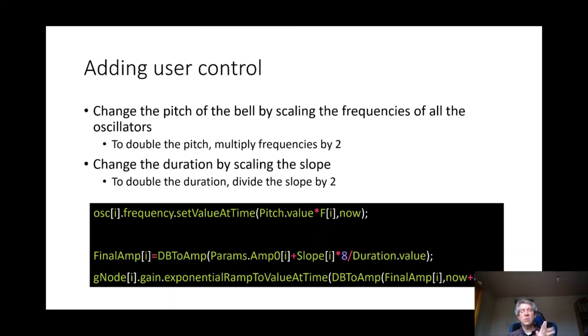So we're going to use that in building up the bell sound synthesis, and we're going to add some form of user control. If we have a set of oscillators, we can change the frequency of all those oscillators to change the pitch of the sound that's produced. If we change how long it takes to decay to a certain value, then we change the duration of the sound. So rather than taking eight seconds before it becomes inaudible or close to inaudible, we can make that take four seconds or 16 seconds. We do that by dividing that slope value by whatever is the scaling factor which we want to apply to the duration. In short, if we want to increase the pitch by a factor of two, multiply all the frequencies by two. If we want to increase the duration by a factor of two, divide that slope by the scaling factor for the duration.